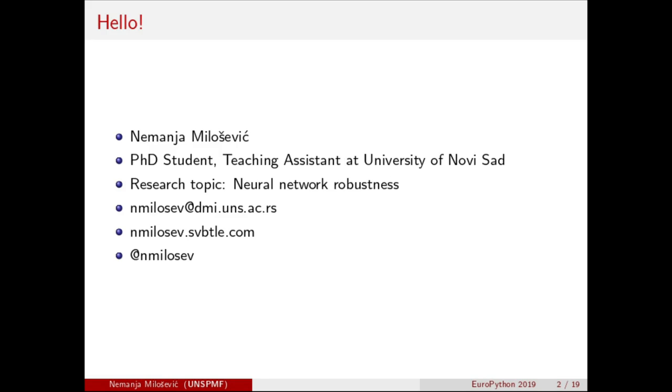My name is Nemanja. I come from Serbia, from the University of Novi Sad. Novi Sad is the second largest city in Serbia, where I am a PhD student in my third year, and I'm also a teaching assistant at the Faculty of Sciences. My research topic is neural network robustness, which has been a hot topic recently. I'm trying to make neural network models more robust, or less prone to error in difficult situations or when someone is trying to make our models go wrong.